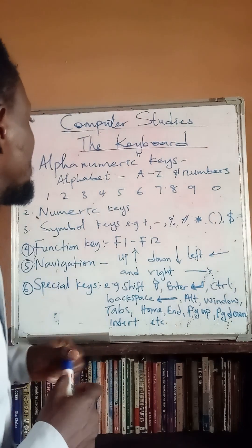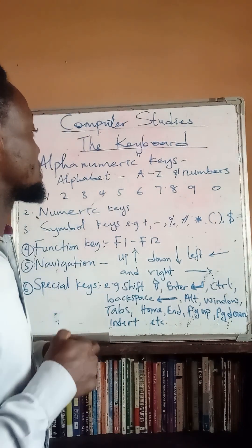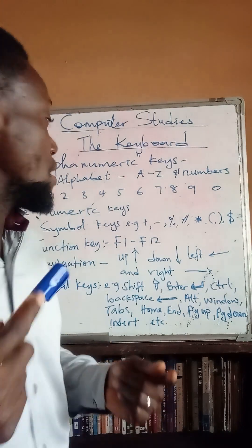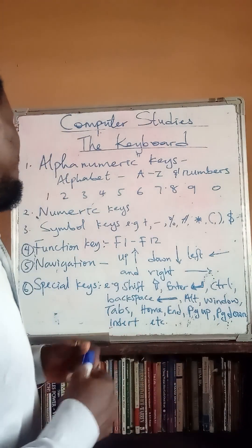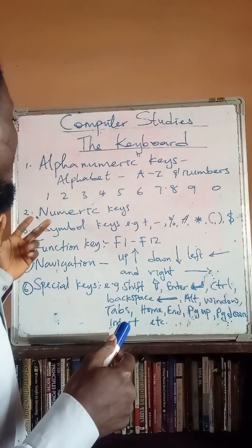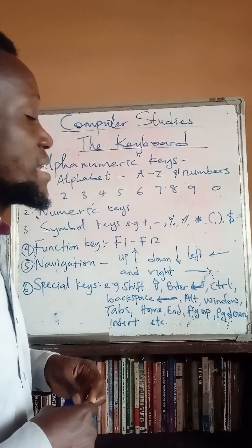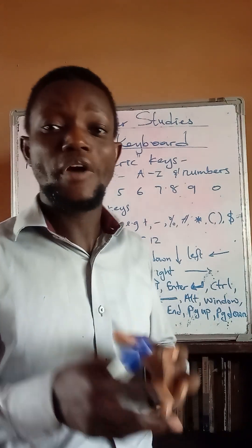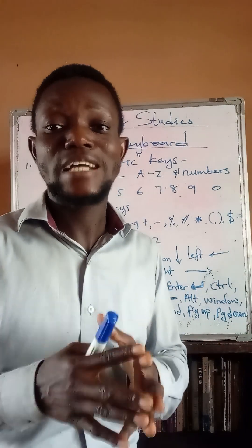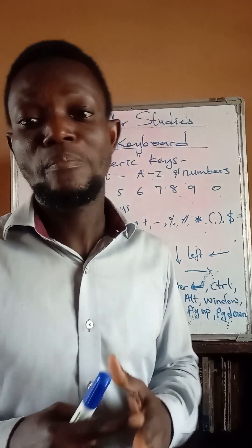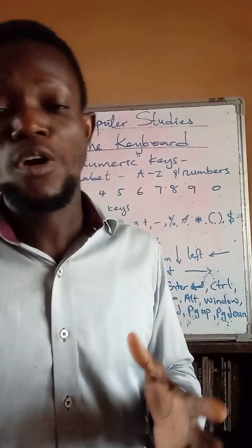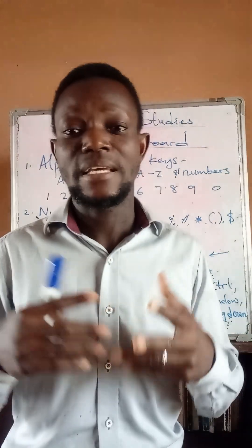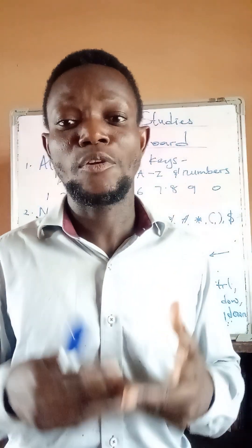Then we have the number keys. The number keys cover numbers one, two, three, four, five, six, seven, eight, nine, and zero. We also have the numeric keypad, which is specifically used for entering large volumes of numbers when working with certain applications such as Excel and other applications that require complex calculations.